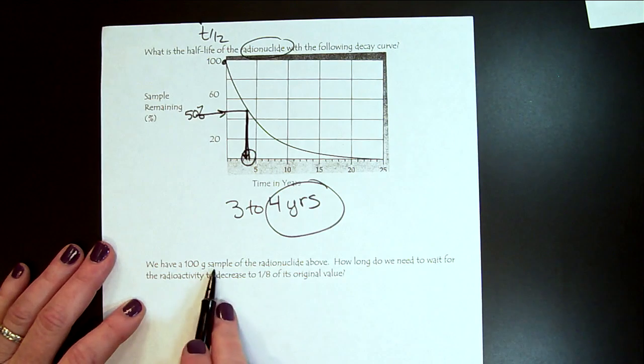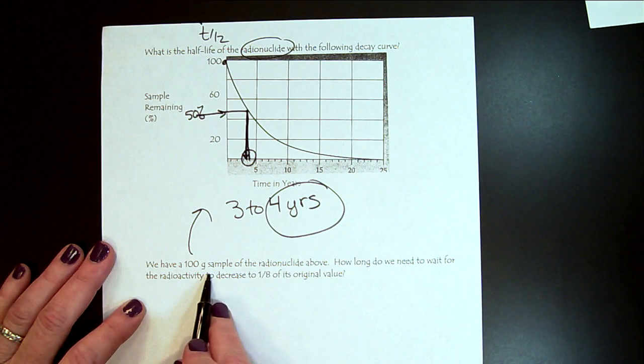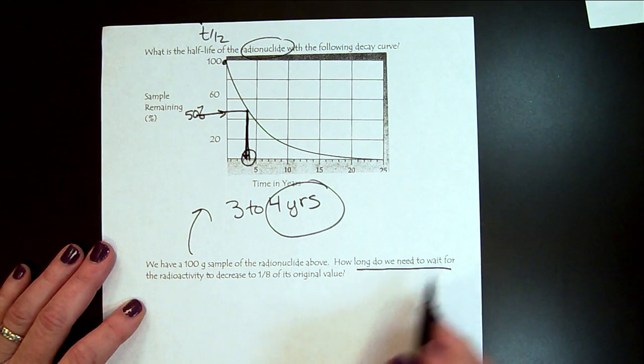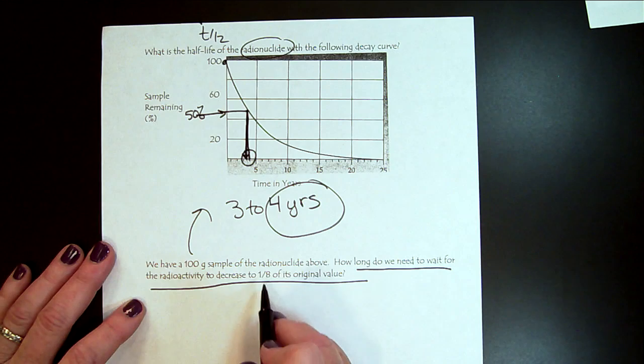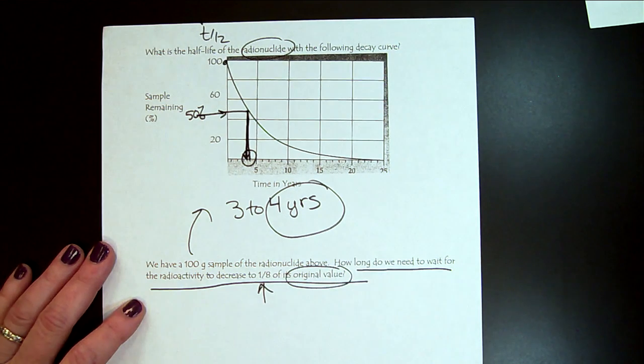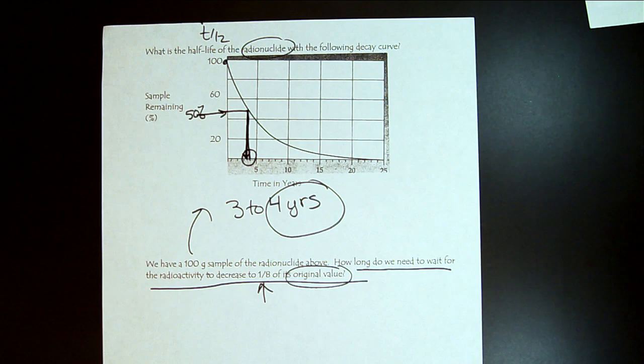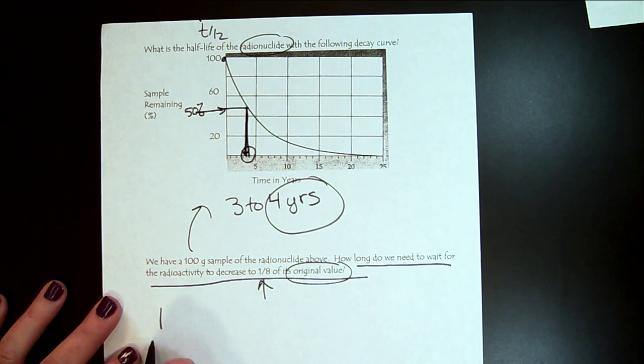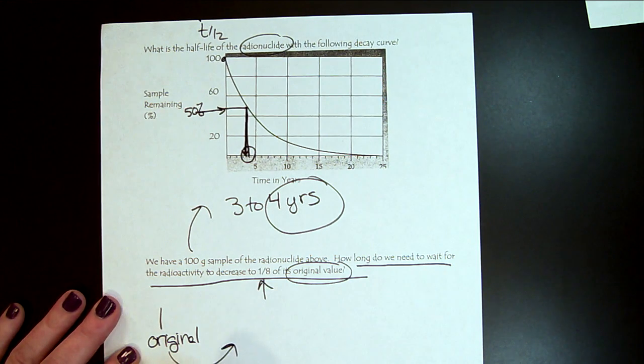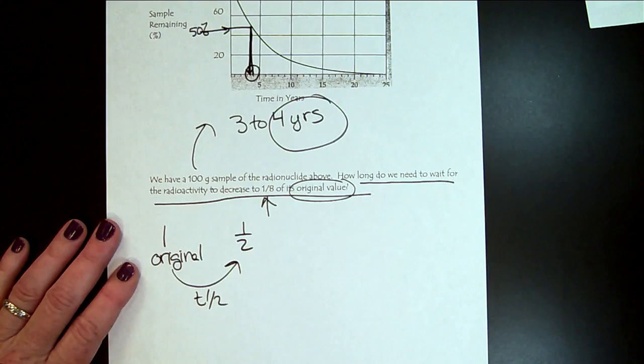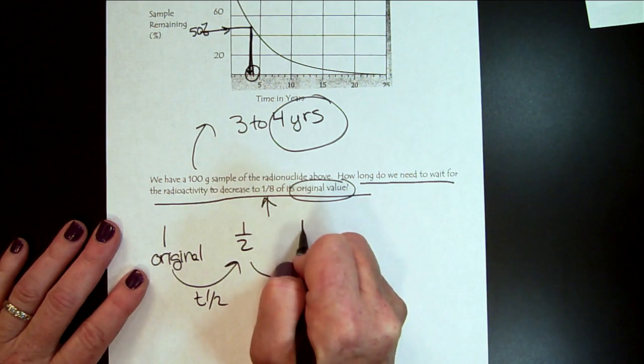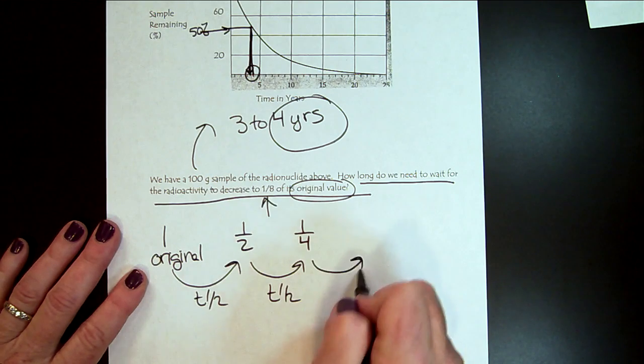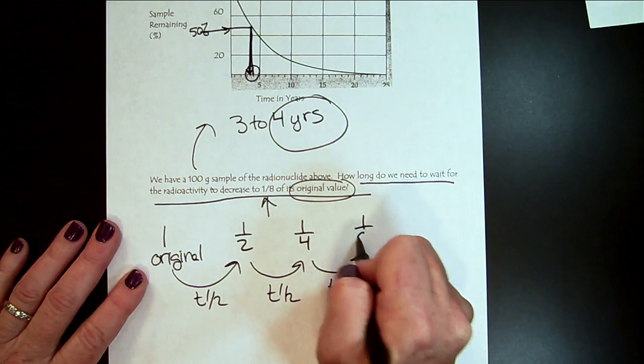So let's say we have 100 grams of this sample above. How long do we need to wait for the radioactivity to decrease to one-eighth of the original value? So on the other one, I used percentages. So now I wanted to make sure that you had an example where we're using fractions. So we start with our original sample. And then after the first half-life, we would have one-half of the original. And then after the second half-life, we would have a quarter. And after the third half-life, we would have an eighth.